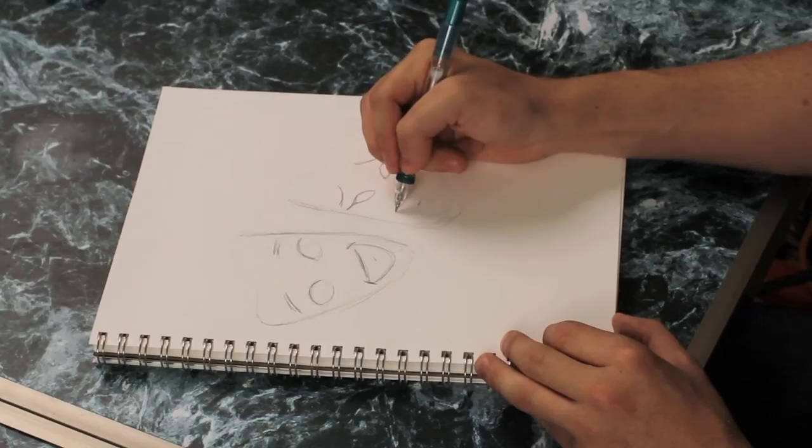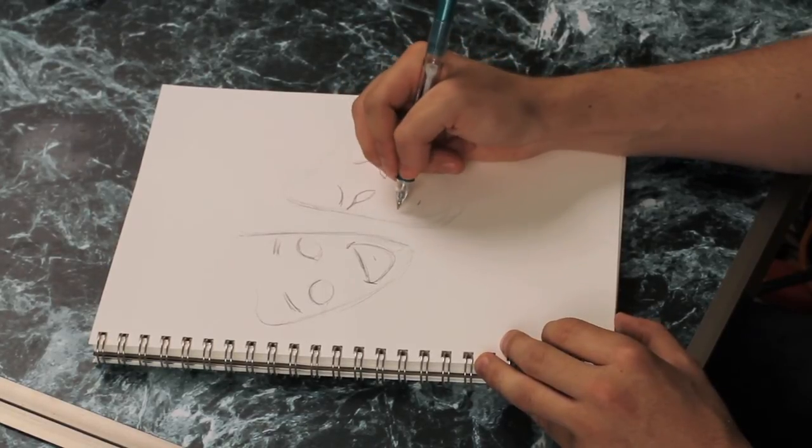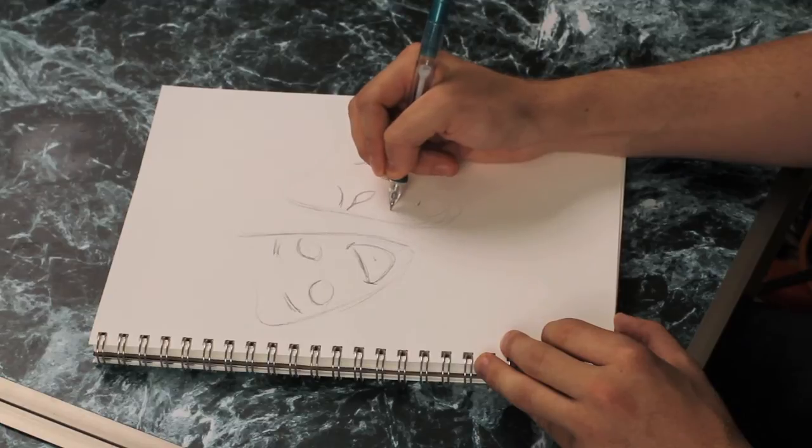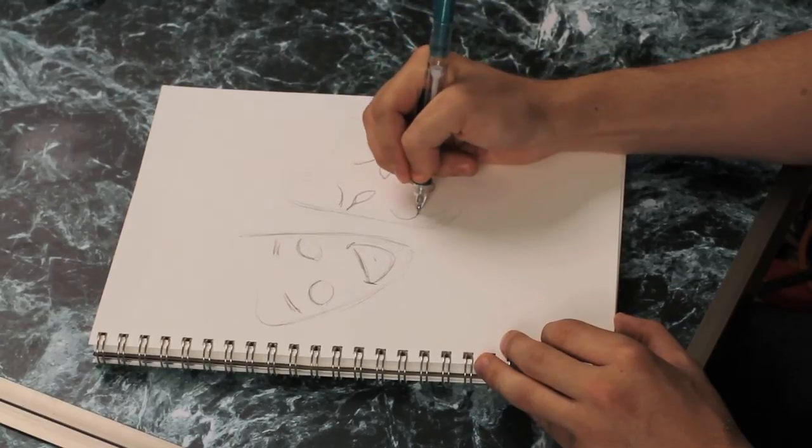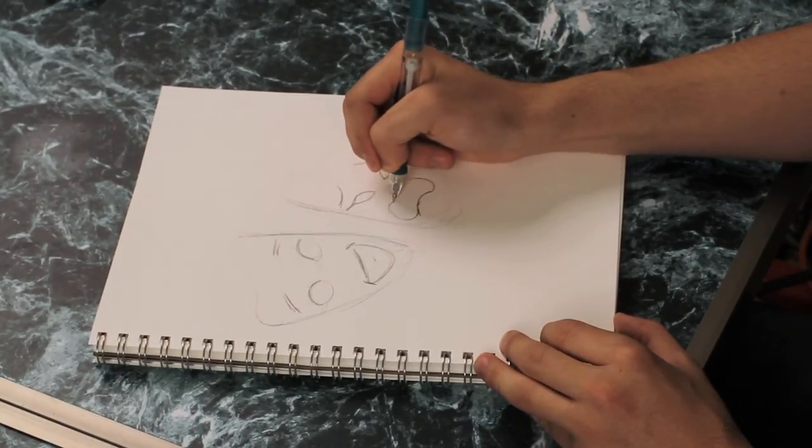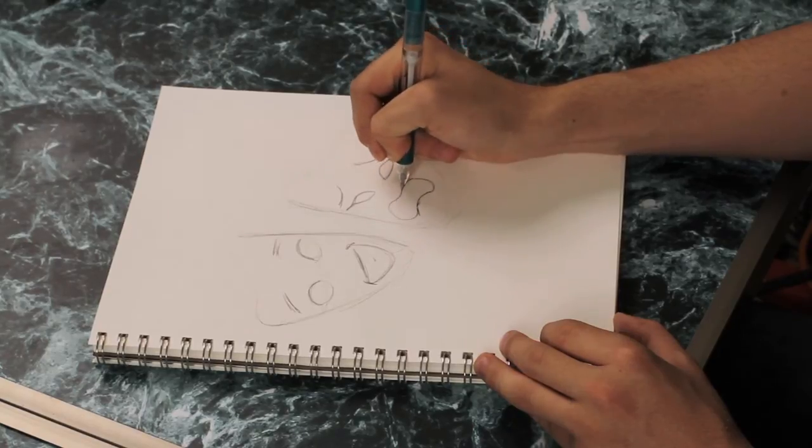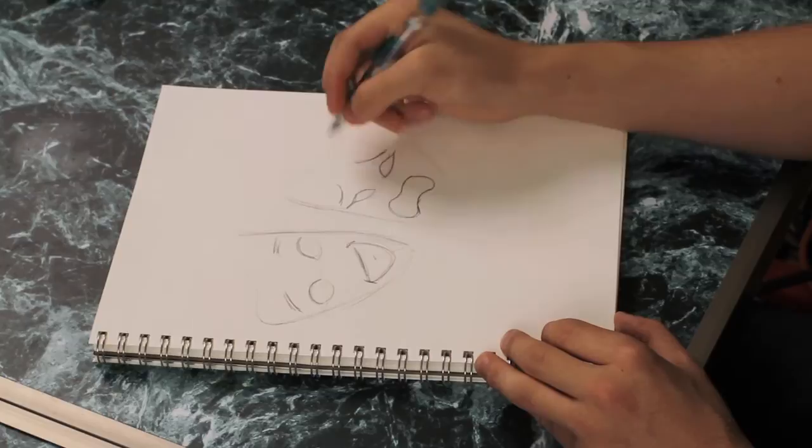And then for the shape of the mouth, there are many different frowny faces you can make. For this we're going to make it curved on both ends. Which is going to look weird for a sec. But once you connect those and have it come down at the top, you'll start to see a very tearful face.